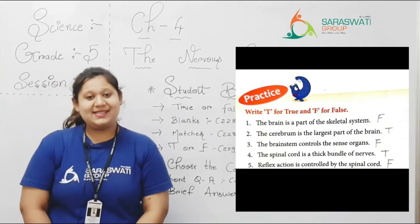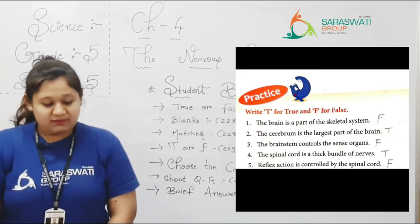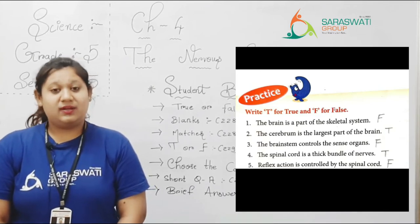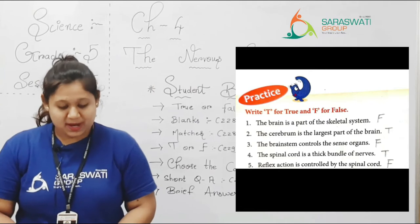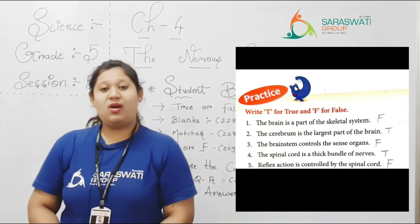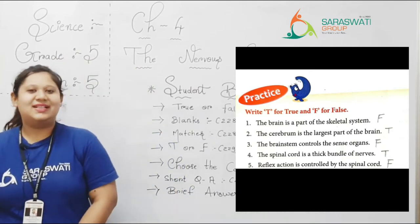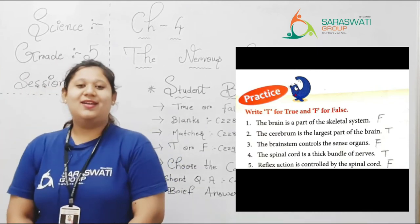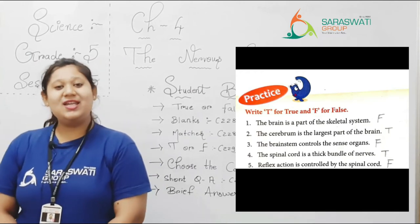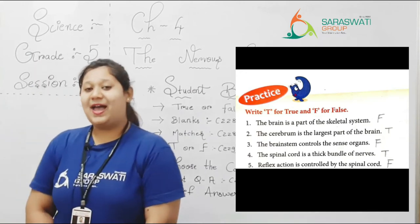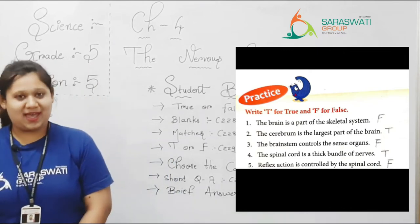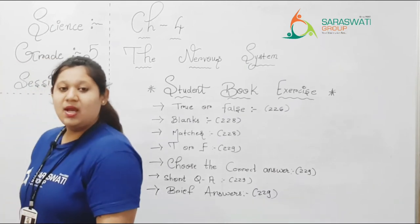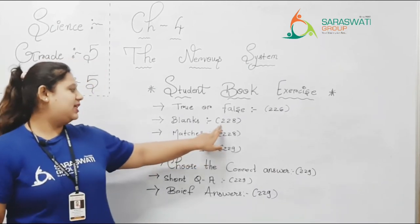Number 5: Reflex action is controlled by the spinal cord. Reflex action, woh spinal cord ke through control nahi ho raha hai — so write down F. Now kids, flip the page. Open page number 228. We are going to solve blanks.